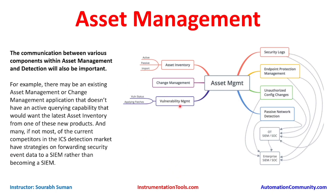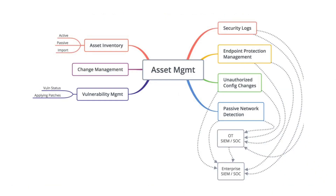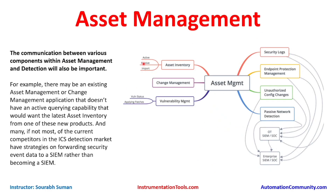Looking at the picture on the right side, many things are associated with asset management. Asset management is not just about creating an Excel sheet or a CMDB to list assets — it has multiple roles. Asset inventory, for example, can be collected in three forms: imported data, active scanning, or passive scanning.